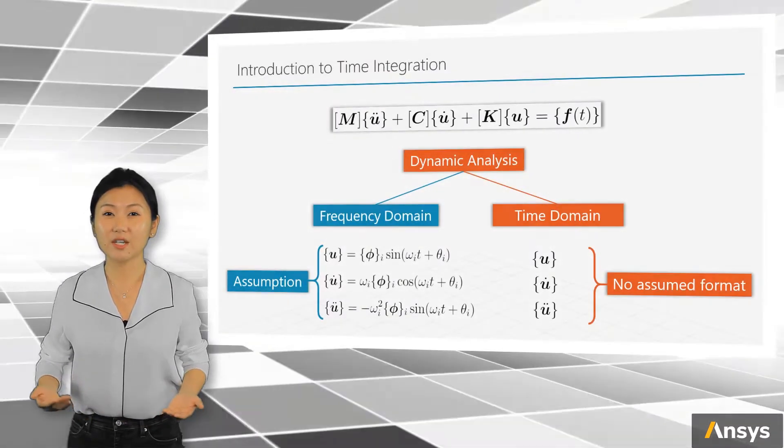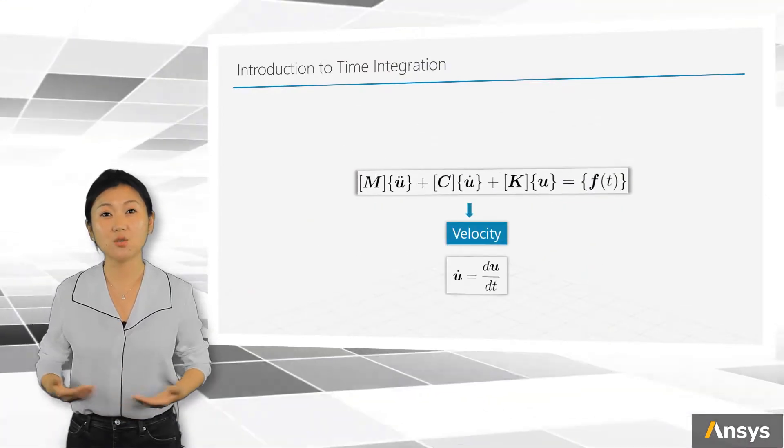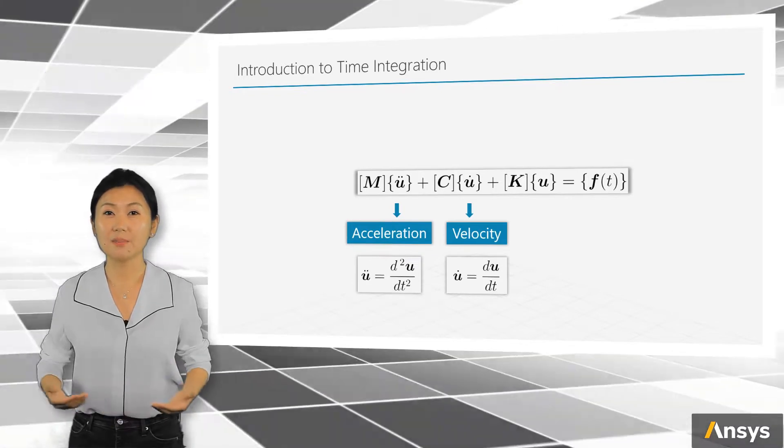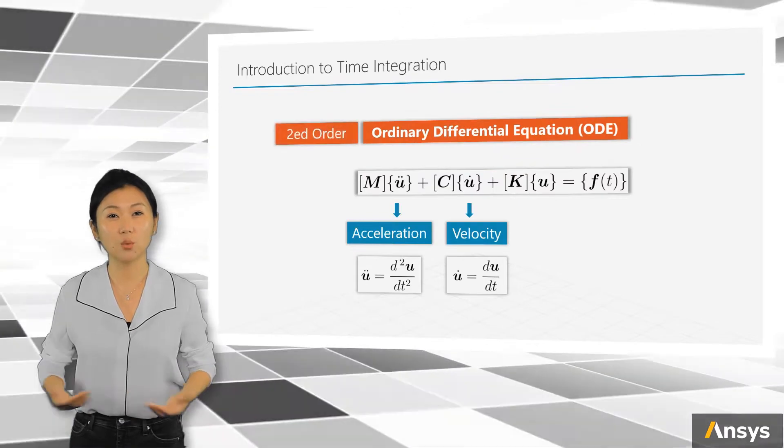We know that U dot is the derivative of U with respect to time, and U double dot is second-order derivative of U. This makes the equation of motion a second-order ordinary differential equation with respect to time.